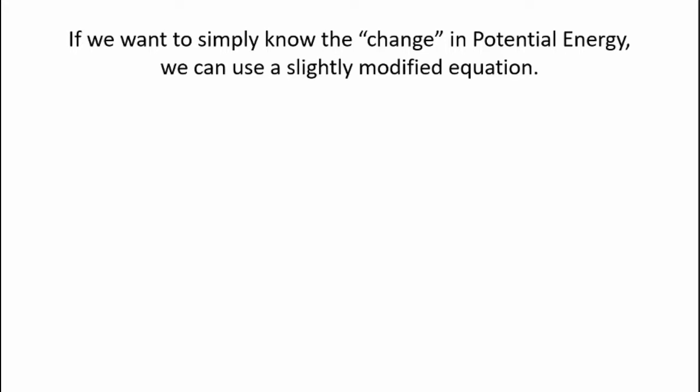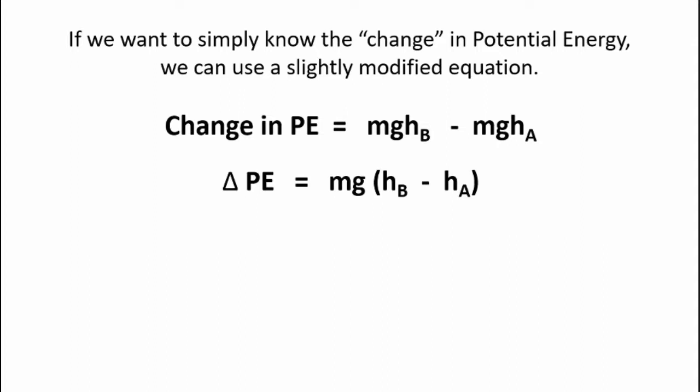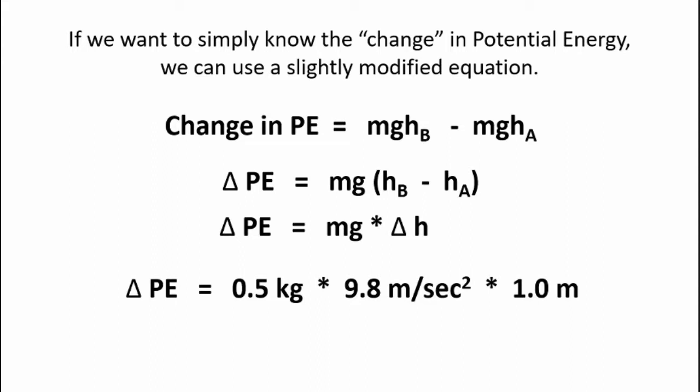Now we want to simply know the change of potential energy. We can use a slightly modified equation. The change in PE is equal to the potential energy at height B minus the potential energy at height A. Now applying some basic algebra, delta PE is equal to mg times the height of B minus the height of A. Or delta PE is equal to mg times delta H, the change in height. Putting in some numbers, delta PE is 0.5 kilograms times 9.8 meters per second squared times the height change of one meter. This gives us a delta PE of 4.9 newton meters.